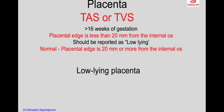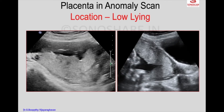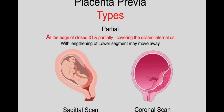When you see a low-lying placenta, a follow-up ultrasound examination — including if necessary a TVS — should be done after 32 weeks of gestation to confirm or rule out placenta previa. If it is mild, with lengthening of the lower segment, the placenta may move away. So a partial placenta previa may turn out to be normal with the development of the lower uterine segment.